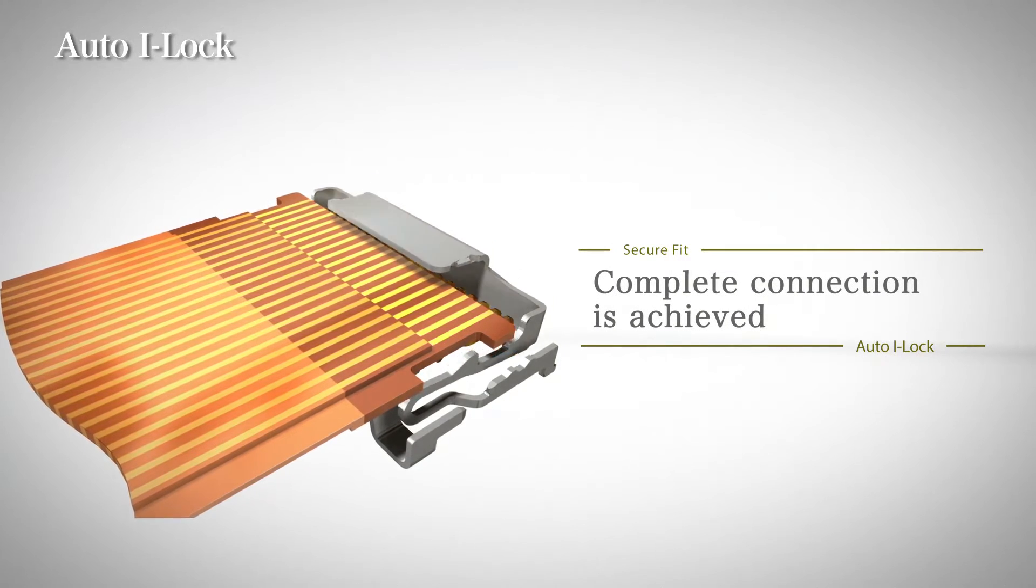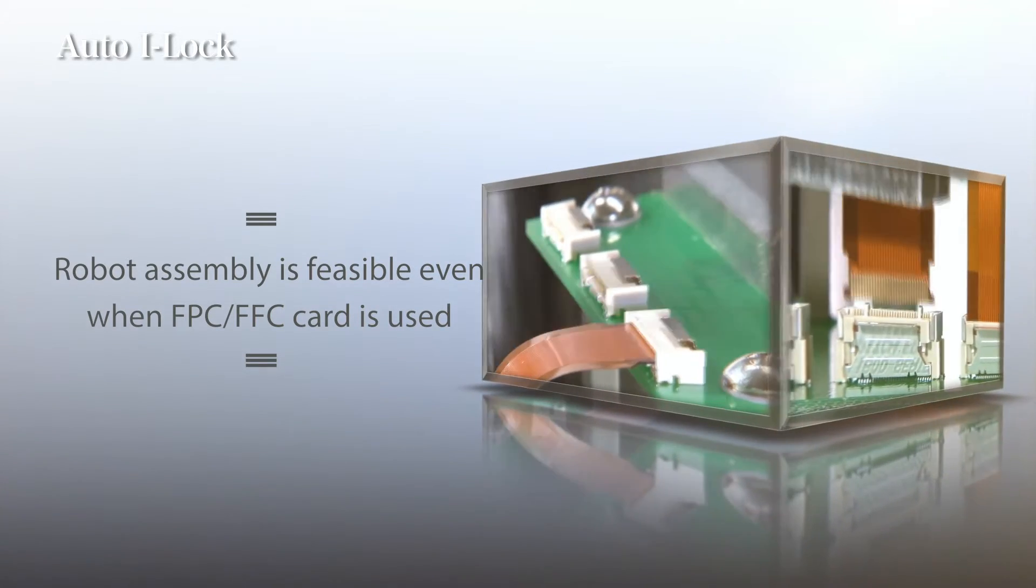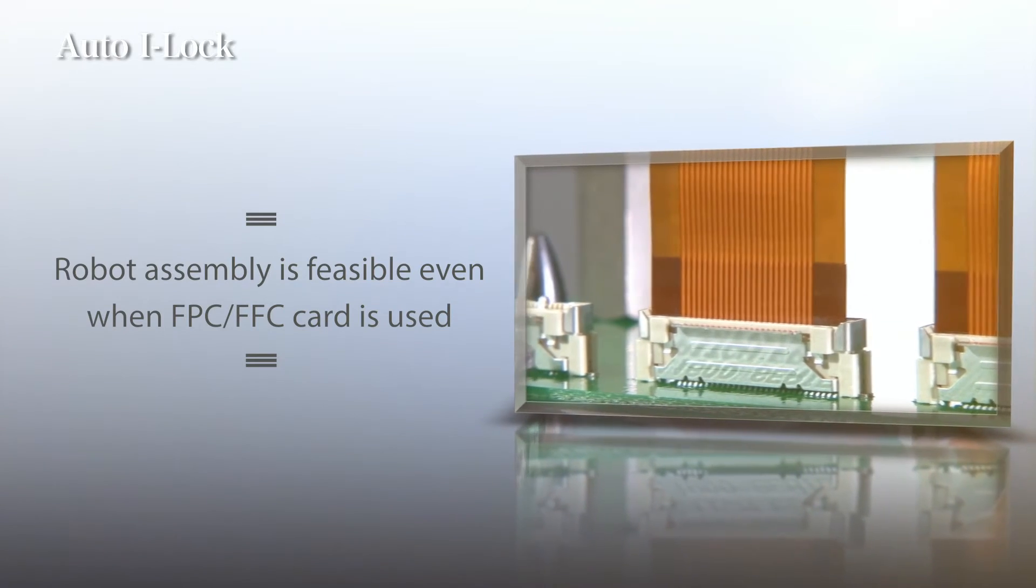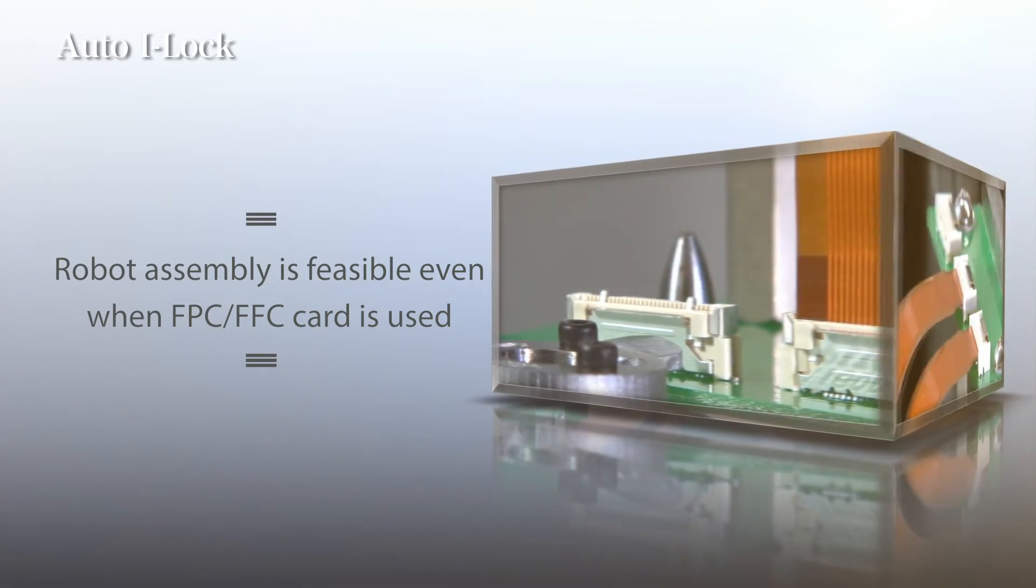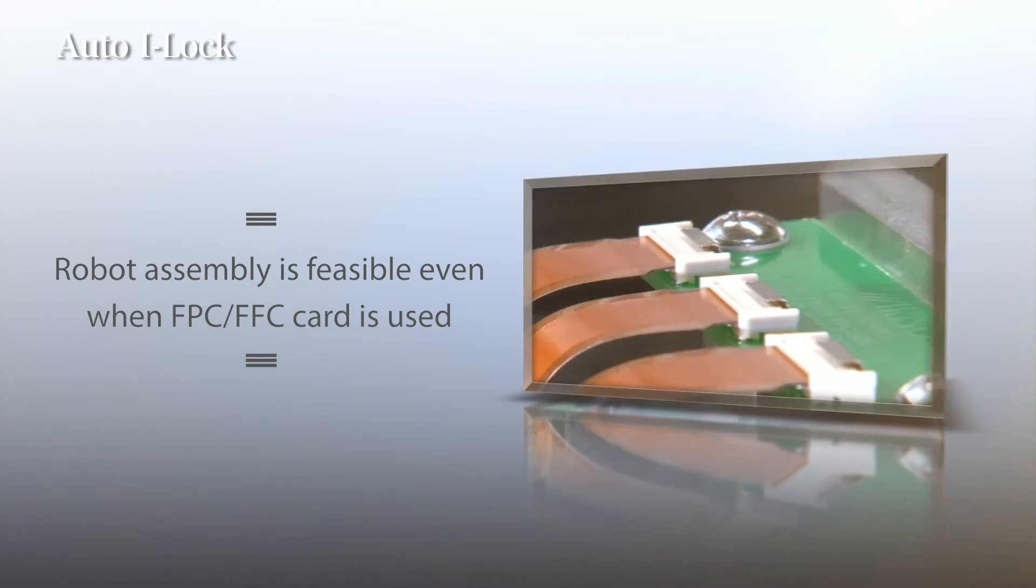It was initially thought that the FPC FFC card was unsuitable for robot assembly. However, our ELISO Auto iLock system makes it possible for assembly automation with the structure that automatically locks the card.